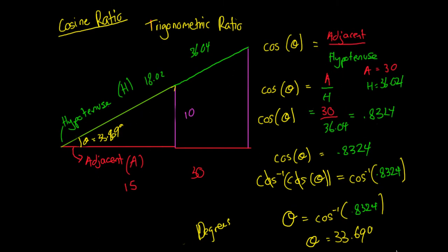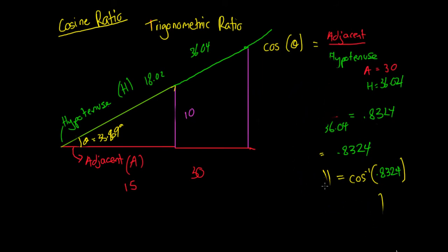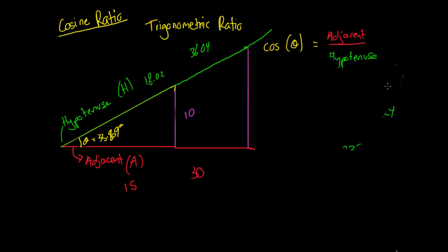So as long as this ratio is consistent, we could double the side length again — the ratio of adjacent divided by hypotenuse will be constant, and we can continue to use our cosine providing that ratio is constant. The tricky thing people usually find is working out when to use the cosine ratio versus the tangent ratio or the sine ratio. Someone a long time ago came up with a little mnemonic: cosine equals adjacent divided by hypotenuse. When trying to remember the cosine ratio, just remember 'CA' — cosine equals adjacent over hypotenuse.